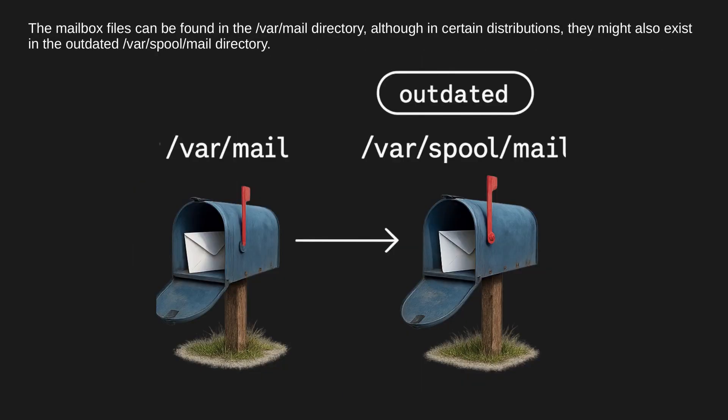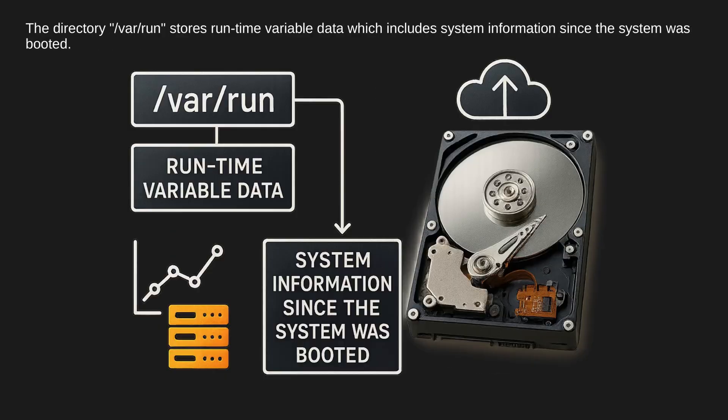The mailbox files can be found in the /var/mail directory, although in certain distributions they might also exist in the outdated /var/spool/mail directory. The directory /var/run stores runtime variable data, which includes system information since the system was booted.